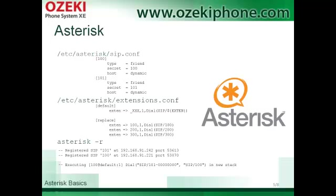This configuration is enough to make a call between two IP phones. You can enter the configuration page of Asterisk with the asterisk -r command. The first two lines indicate that there were two successful SIP extension registrations, and the last line shows that 100.01 is calling the 100 extension.